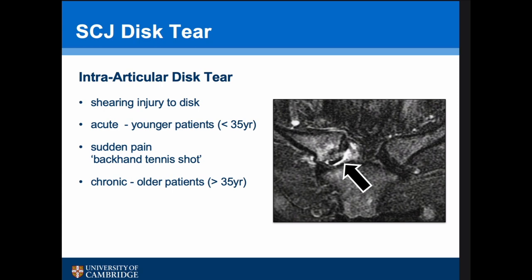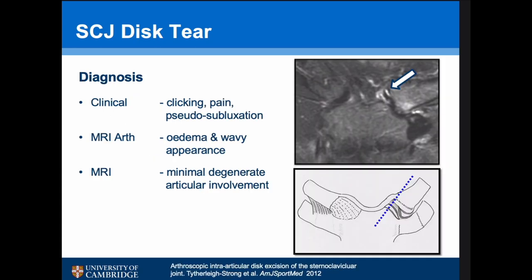Intraarticular disc tears are something previously underappreciated. They occur due to shearing injury to the disc, tending to occur acutely in younger patients — particularly during backhand or forehand tennis shots — causing sudden pain. In chronic patients, a degenerative disc tear can produce a predominantly clicking sensation. Clinically it's diagnosed by clicking and pain on protraction and retraction, and patients almost have a pseudo-subluxation as the medial end of the clavicle clicks over the torn disc. Diagnosis is with an MR arthrogram, which can show oedema and a wavy appearance to the disc.